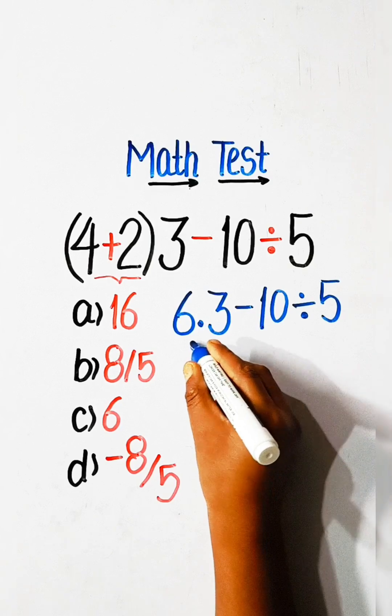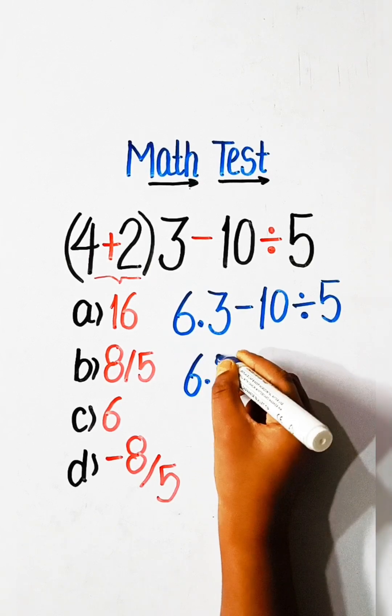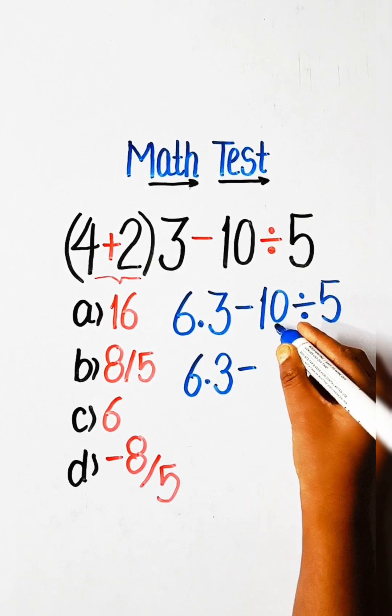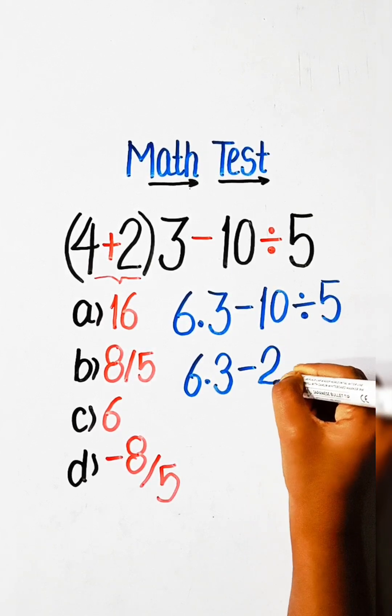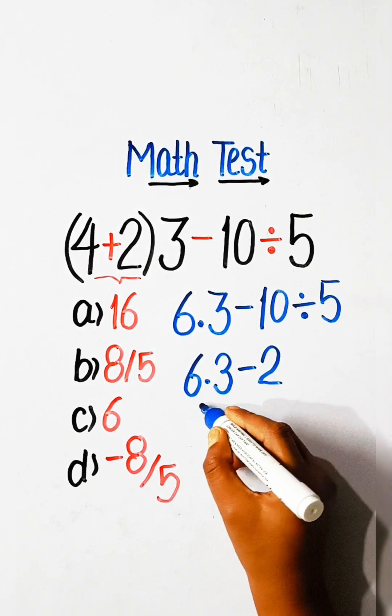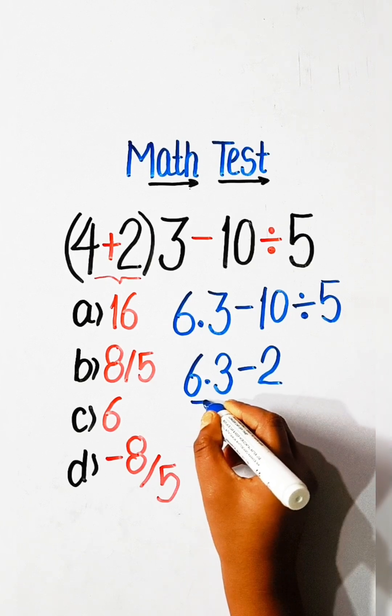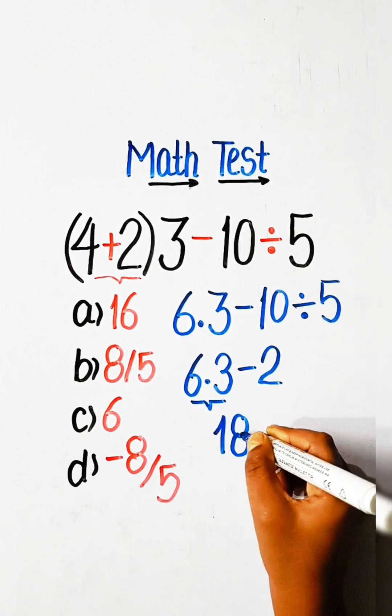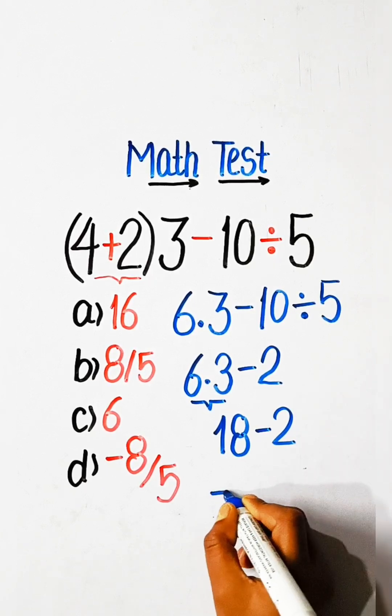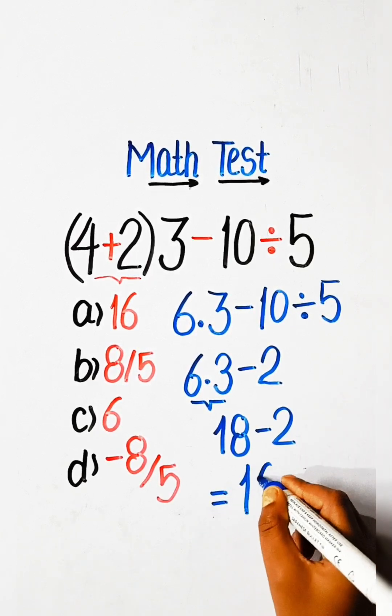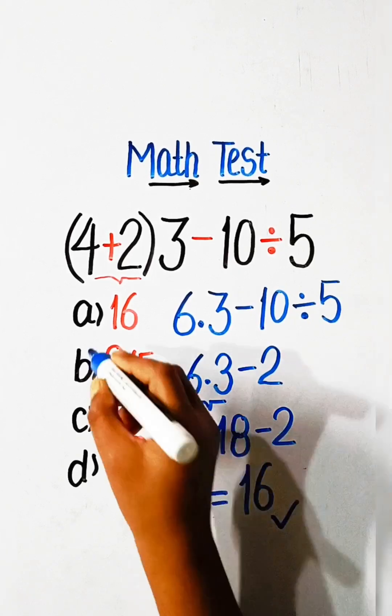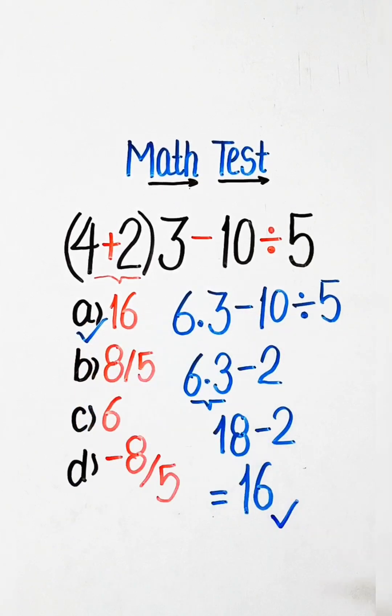So we can write here 6 multiply by 3 minus 10 divided by 5. 10 divided by 5 is 2. 6 multiply by 3 is 18. So 18 minus 2 equals 16. So 16 is our correct answer, option A will be correct.